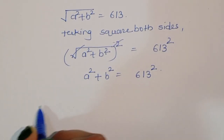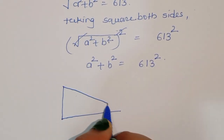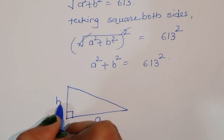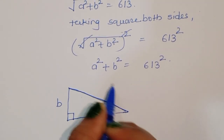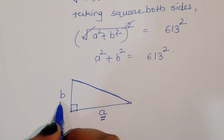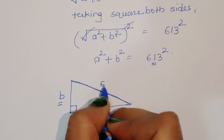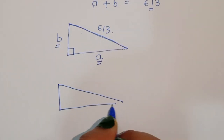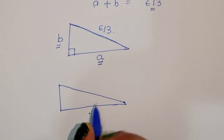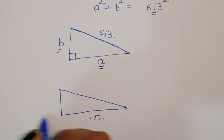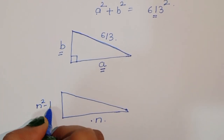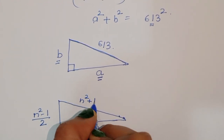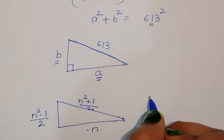Now, according to Pythagoras theorem, if this angle is 90 degrees, this side is a, this side is b, then this is the hypotenuse. We have to find the values of a and b, and the hypotenuse is given as 613. By Pythagoras theorem, if one side is n, the next side is (n squared minus 1) divided by 2, and the hypotenuse is (n squared plus 1) divided by 2. This is the first trial.